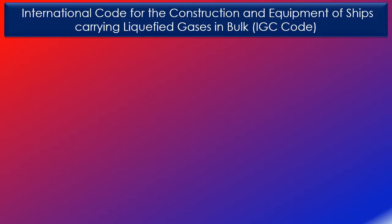The International Code for the Construction and Equipment of Ships Carrying Liquefied Gases in Bulk, or IGC Code, applies to ships regardless of their size, including those of less than 500 gross tonnage, engaged in carriage of liquefied gases having a vapor pressure exceeding 2.8 bar absolute at a temperature of 37.8 degrees centigrade, and certain other substances as shown in chapter 19 when carried in bulk. The IGC Code applies to new gas carriers built after 30th of June 1986.